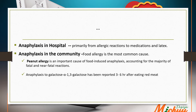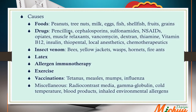Anaphylaxis to galactose-alpha-1,3-galactose has also been reported three to six hours after eating red meat. The most common food causes overall are peanut, milk, egg, shellfish, fruits, and grains. Drug causes include penicillin, cephalosporins, sulfonamides, NSAIDs, muscle relaxants, vancomycin, dextran, thiamine, and vitamin B12. Other causes include insect venoms, latex, allergen immunotherapy, exercise, vaccinations such as tetanus, measles, mumps, and influenza, and miscellaneous causes such as radiocontrast media.